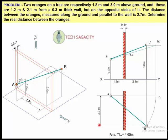Using the same values, the answer is 4.65 meters. If you do it, you will verify the difference. In this way, the answer is 4.65 meters. This is the answer — the visualized answer. The wall is 0.3 meters thick. This is the application level.